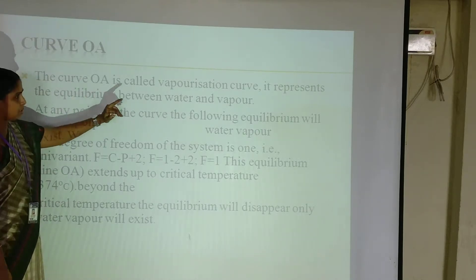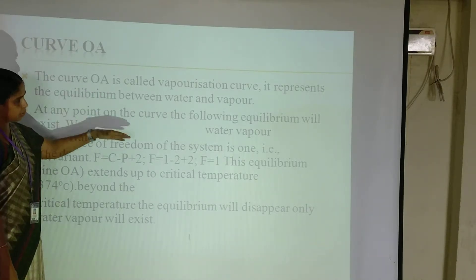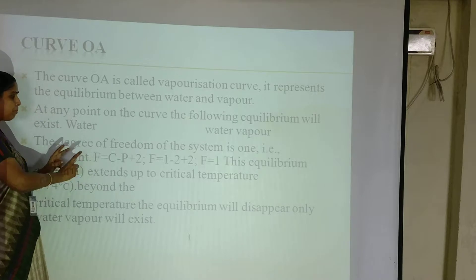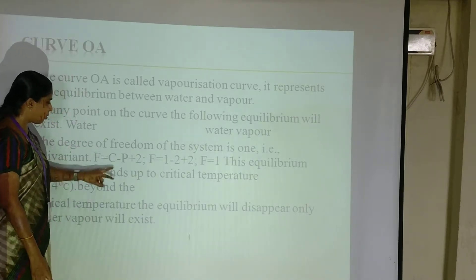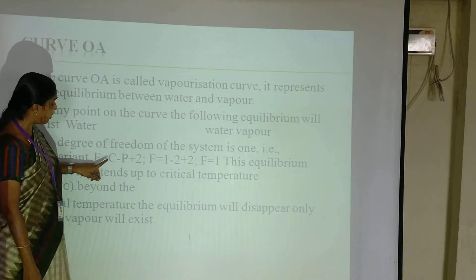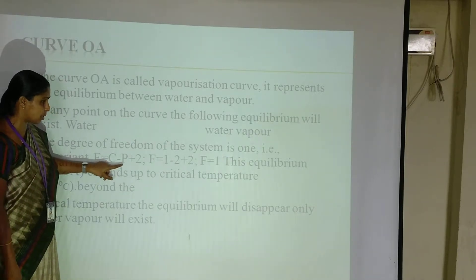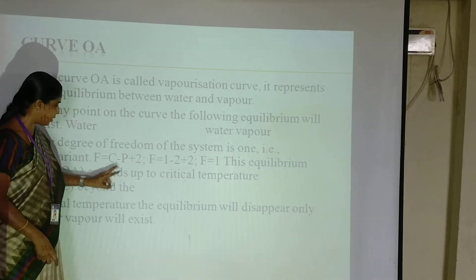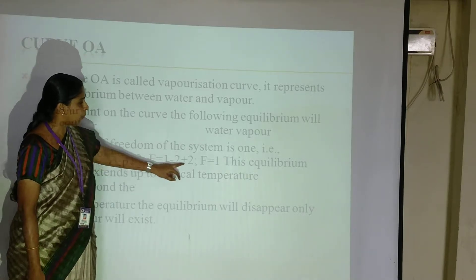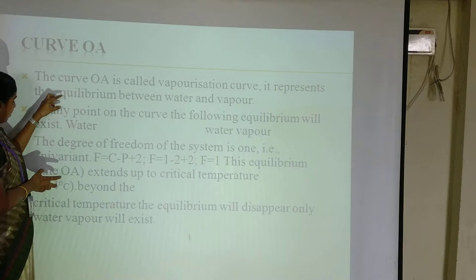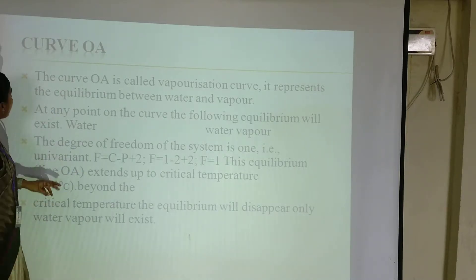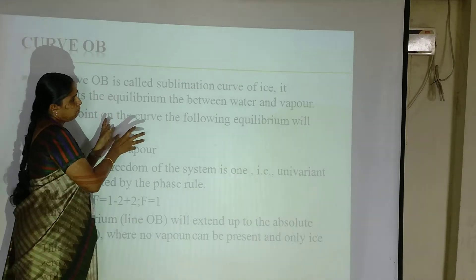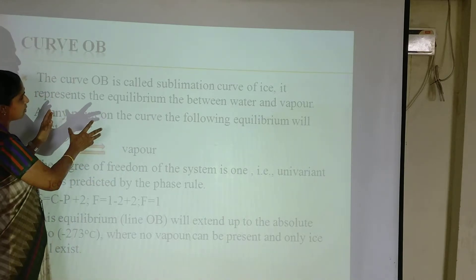Curve O-A is the vaporization curve — that is, liquid is converted into gas. The degree of freedom is calculated using the phase rule: F = C − P + 2. Here it is a one-component system, so C = 1 and P = 2 (liquid and vapor), giving a degree of freedom of 1. Similarly, curve O-B is the sublimation curve, where vapor is converted into solid. The phase rule is applied similarly, and here also it is univariant — degree of freedom is 1.